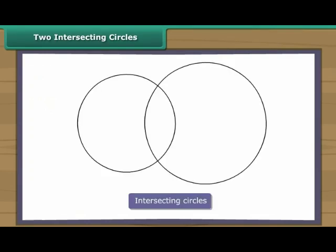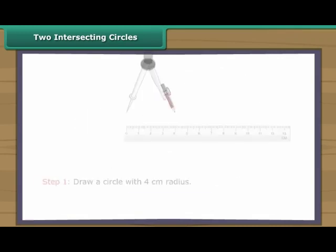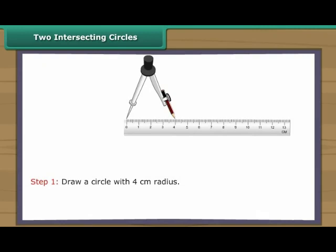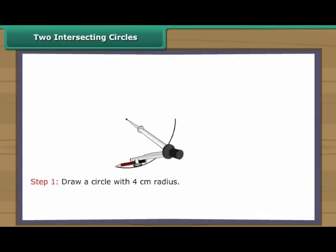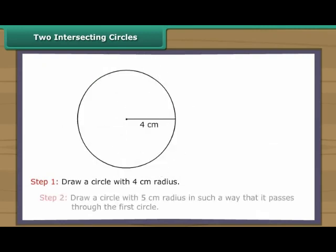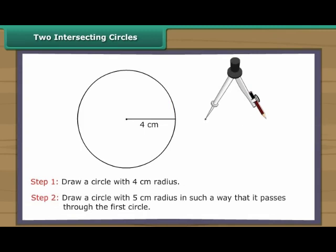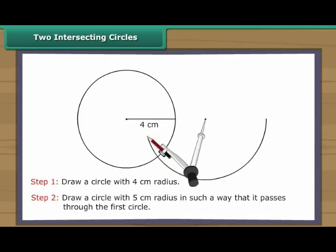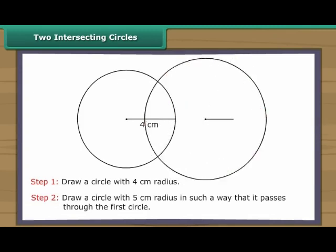Two intersecting circles. Intersecting circles may or may not have the same radii. Let us now draw intersecting circles. Draw a circle with four centimetres radius. Draw a circle with five centimetres radius in such a way that it passes through the first circle. We have two intersecting circles.